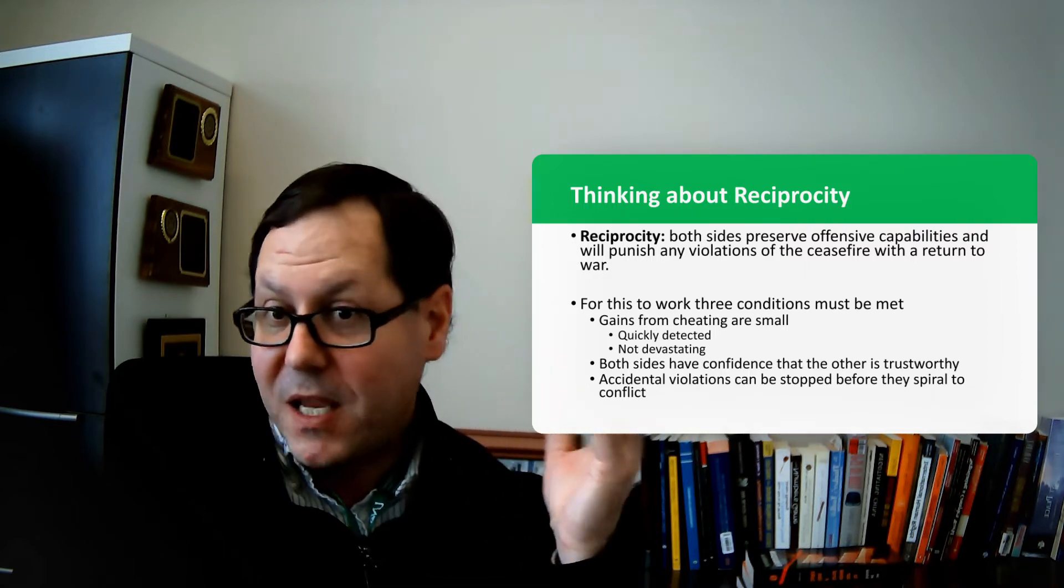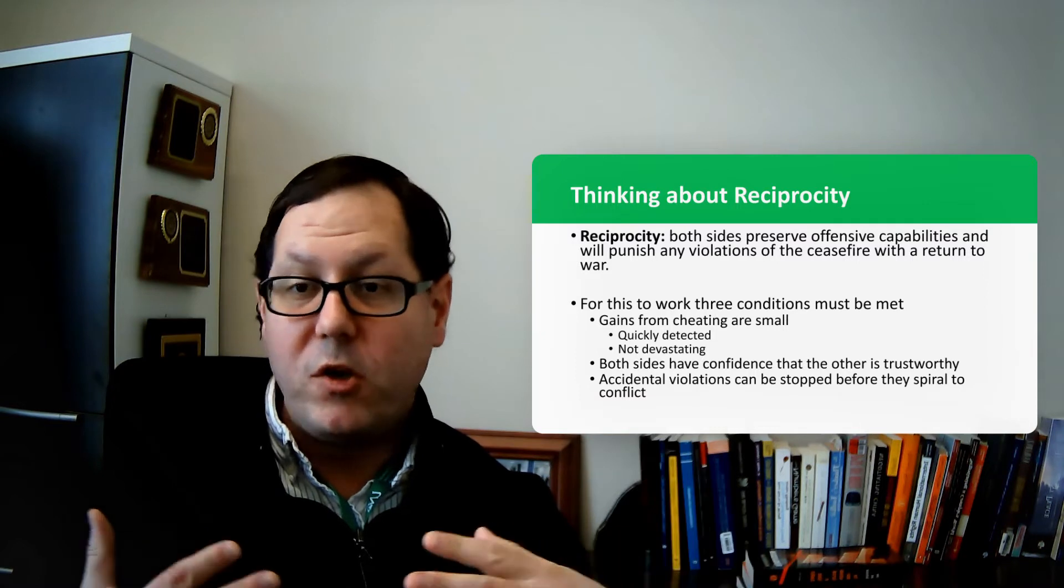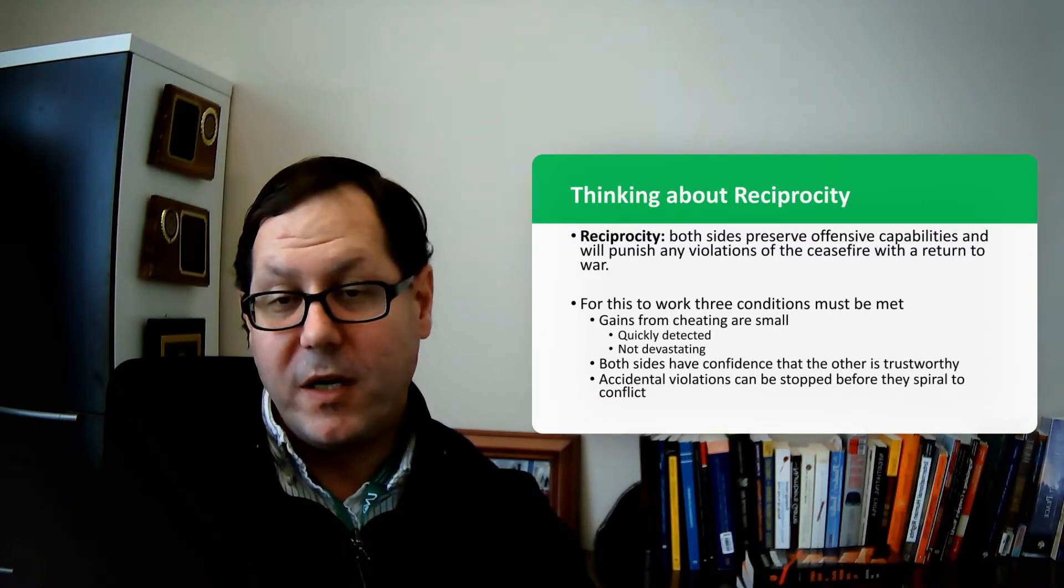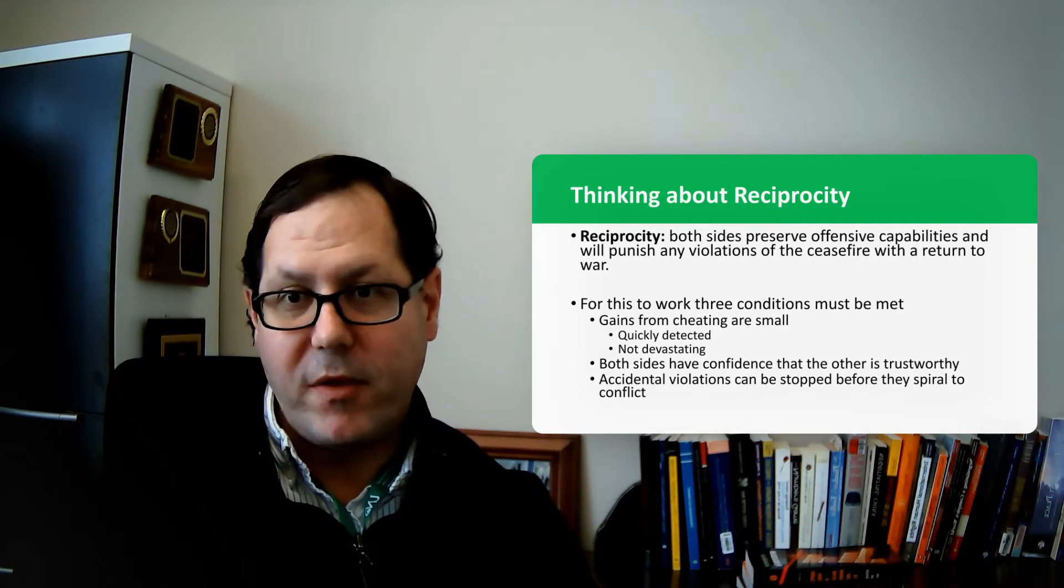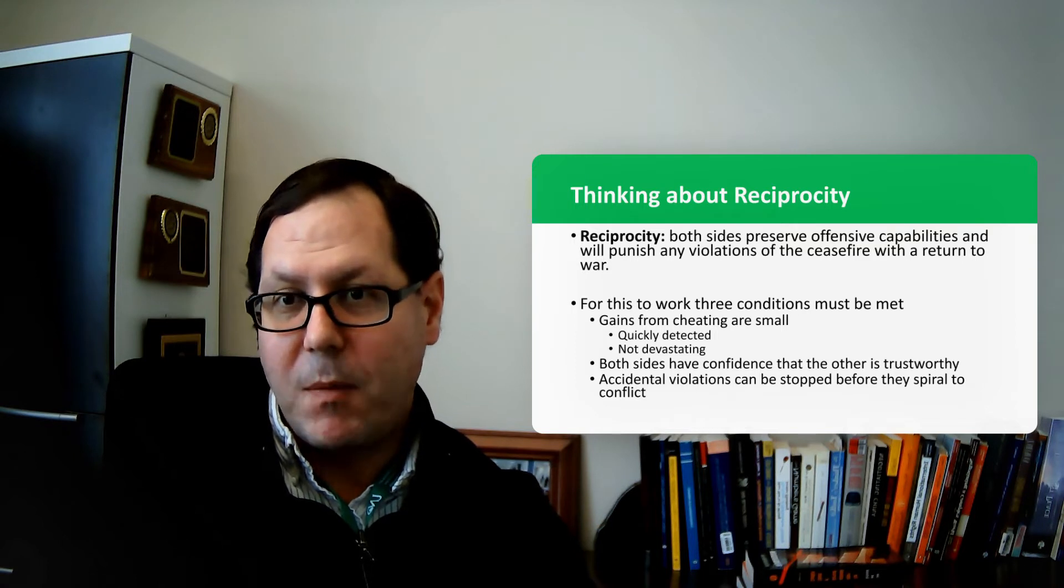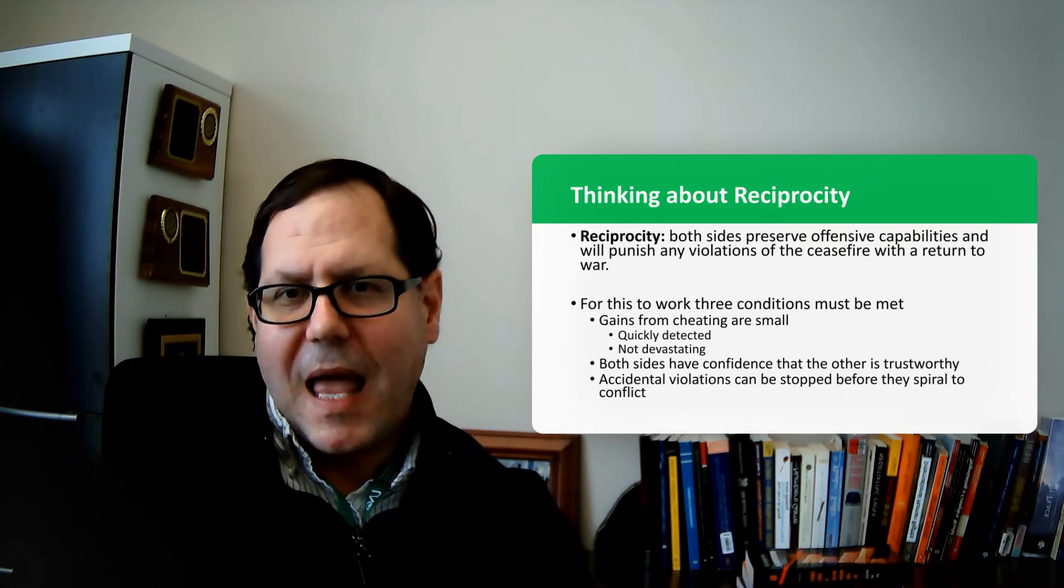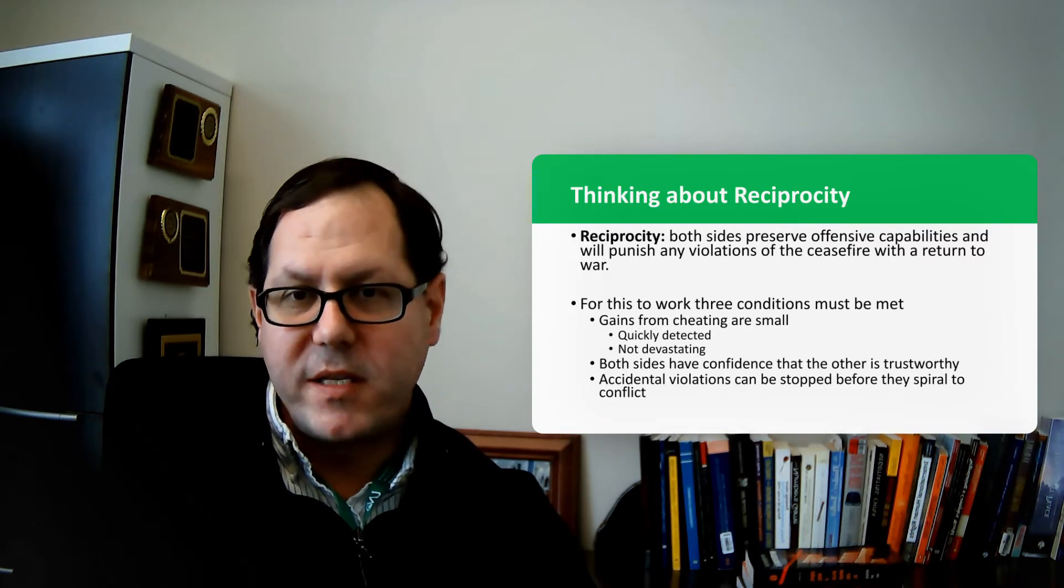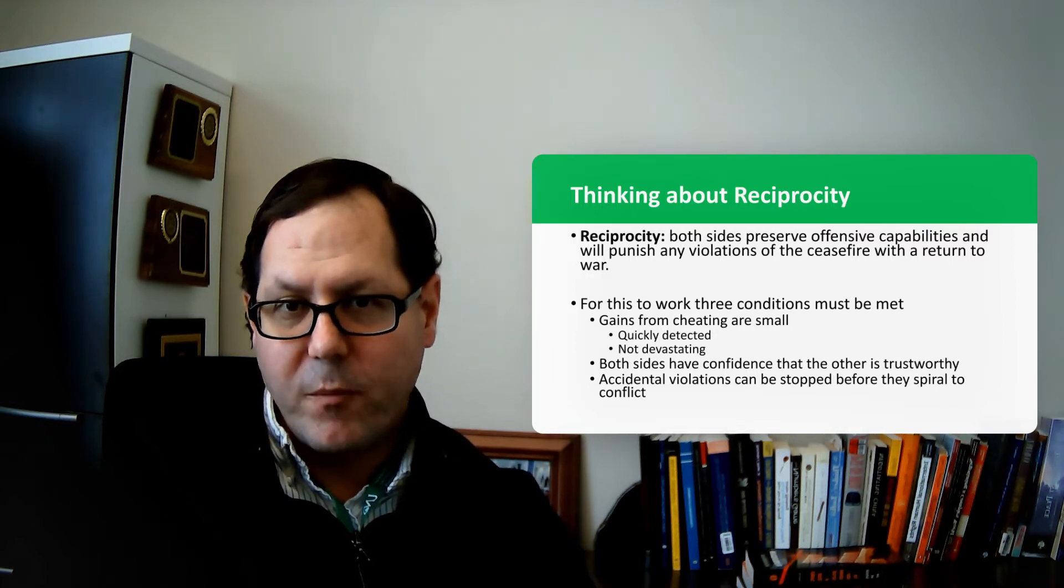But in addition to that, in order for reciprocity to work, you need to be able to detect when somebody is violating an agreement. You need to be able to know that they're doing something and pick that up in real time. You also need to make sure that those violations aren't completely devastating. And that is something that might be a concern. If you disarm and you demobilize and you send your forces back, is it possible that the other side is going to be able to secretly mobilize and strike at you in the night and destroy the core of your military capabilities? That kind of thing could be terrifying for a potential group considering disarming.